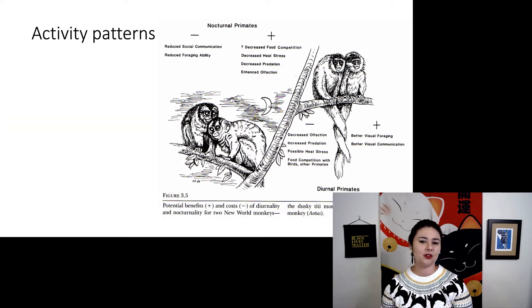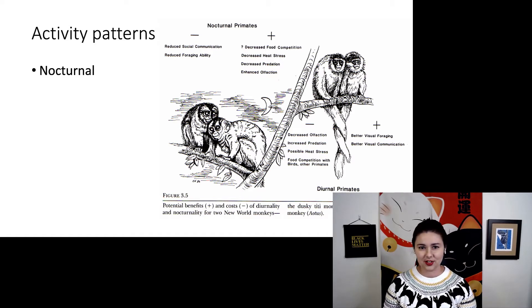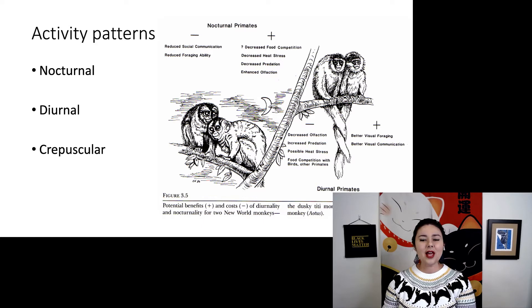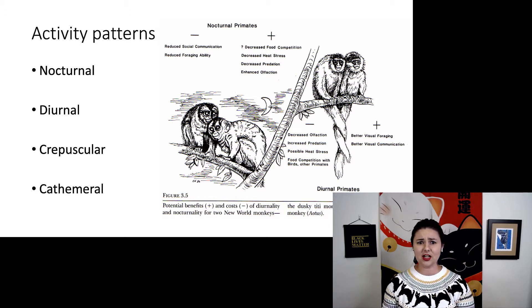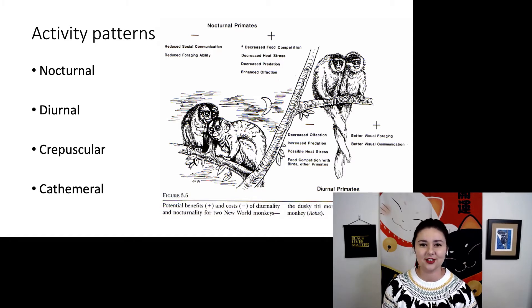Another thing to think about is activity patterns or when this species is active. Some of the most common activity patterns are nocturnal, active at night; diurnal, active during the day. Which one are we? You should know that one. Then we have crepuscular, which means species that are active at twilight, so dawn and dusk. And then cathemeral is just irregular and anything that doesn't fit in the other three categories. Most primates are either nocturnal or diurnal. Do you remember which strepsirrhines are? Strepsirrhines are primarily nocturnal and anthropoids are primarily diurnal.